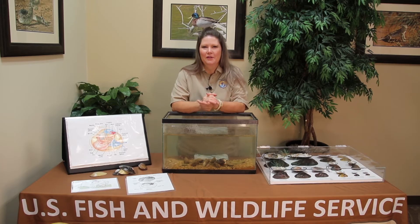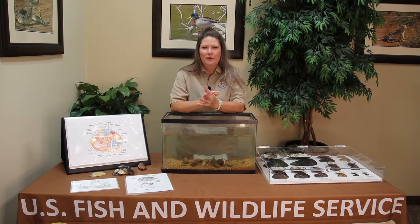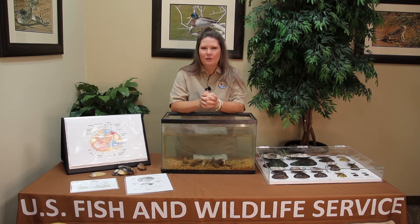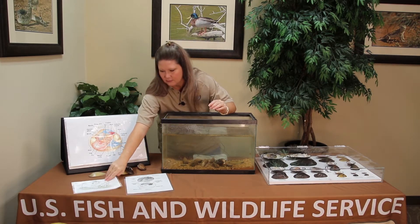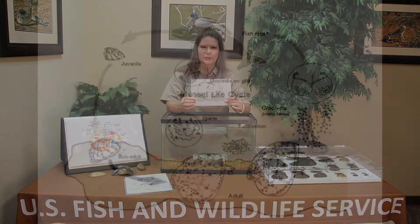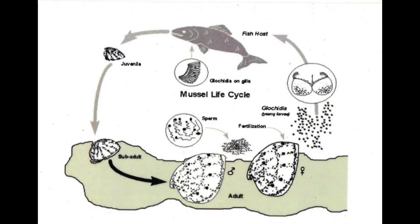So how do mussels reproduce? The freshwater mussel has a unique life cycle that includes a short parasitic stage attached to a fish. Here's an illustration of the life cycle. It can be described in five distinct life stages: the larval stage called glochidia, developed in the gill of the female mussel; a free-drifting glochidia expelled from the female mussel; a parasitic glochidia attached to the gills or fins of a living host fish; a free-living juvenile mussel; and an adult mussel.